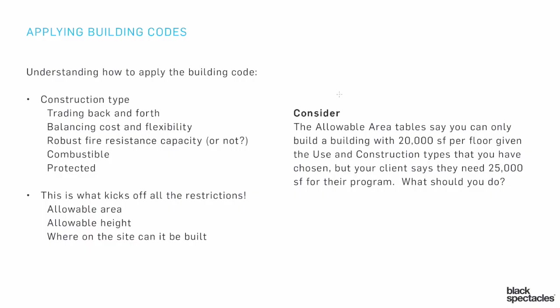Consider this: the allowable area tables say you can only build a building with 20,000 square feet per floor, given the use and construction types you have chosen. But your client says they need 25,000 square feet for the program. So you have a building wanting to be 25,000 square feet per floor, but given the choices you've made, the limitation says it can only be 20,000.